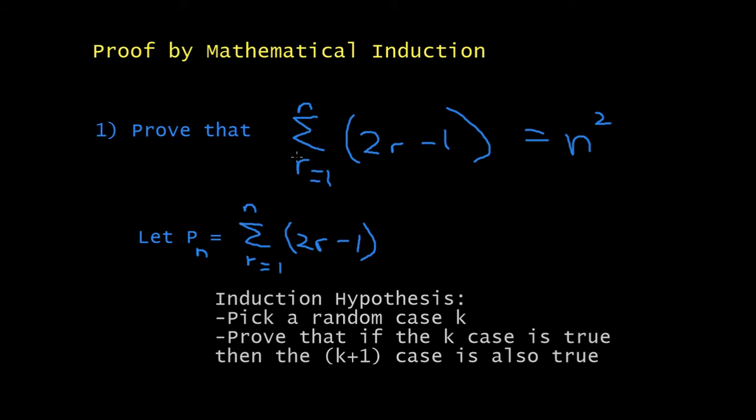So, this is saying, the summation of 2r minus 1, starting at 1, and ending at n, is equal to n squared. They want you to prove this.